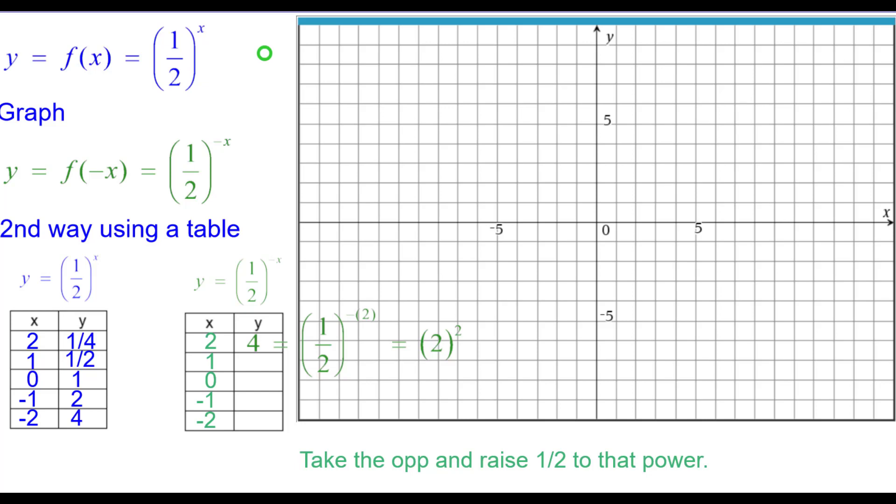So 1 half raised to the opposite of 2 makes 2 to the squared because the negative makes the 1 half reciprocal. So 2 comma 4 is plotted.